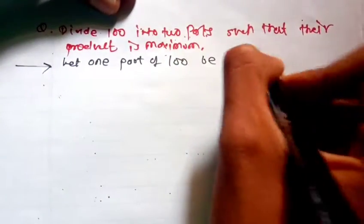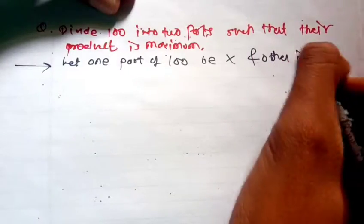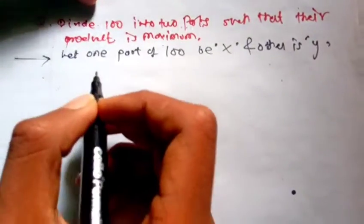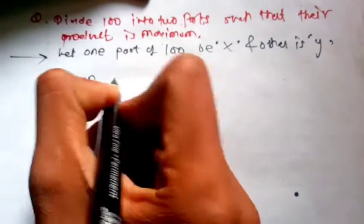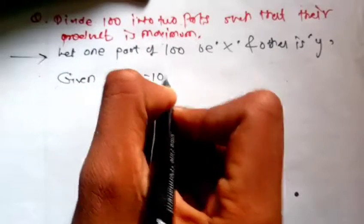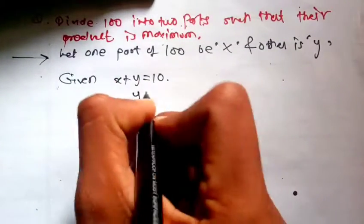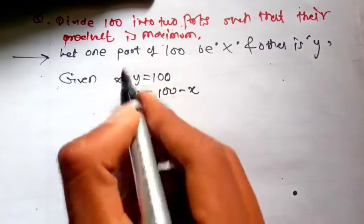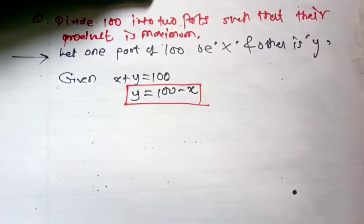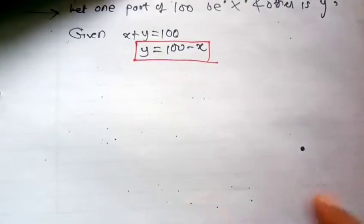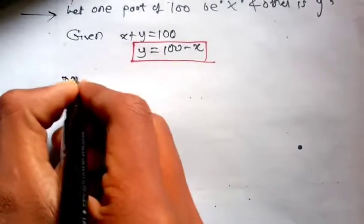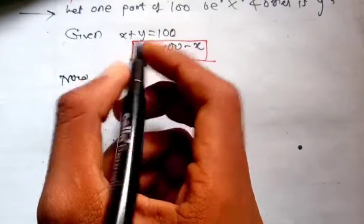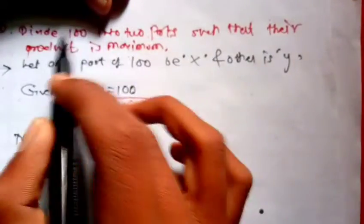Given X plus Y equals 100, so the other part will be 100 minus X.